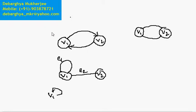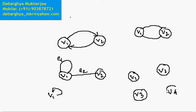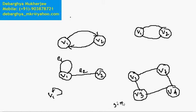Using these two concepts — parallel edges and loops — we define a simple graph. A simple graph has vertices like V1, V2, V3, V4 with connectivity between them, but it does not have any parallel edges and does not have any loops. If any graph has no parallel edges and no loops, it is called a simple graph.